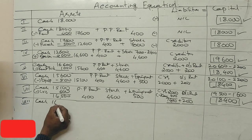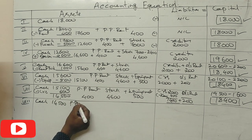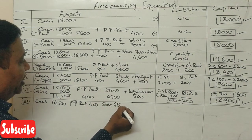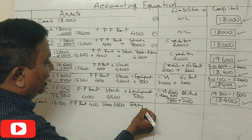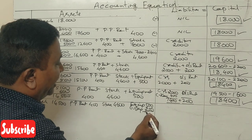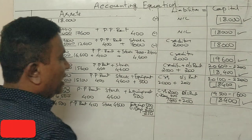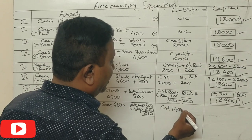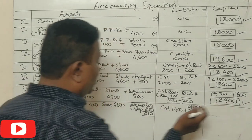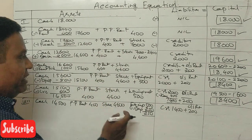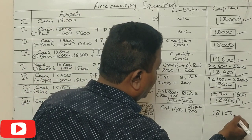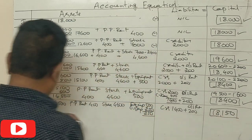Creditors ₹1,400 plus outstanding rent ₹200 = liabilities ₹1,600. Total assets ₹18,000. Depreciation is applied — equipment reduces. Capital becomes ₹18,150 minus depreciation. The equation still balances at ₹18,000 after depreciation adjustment.